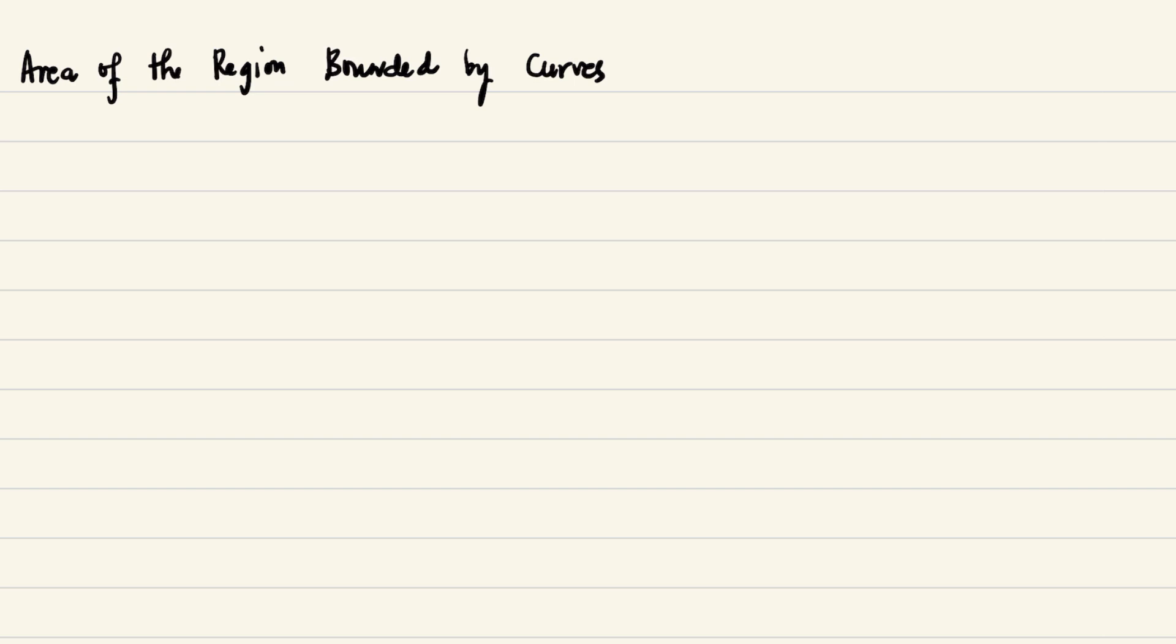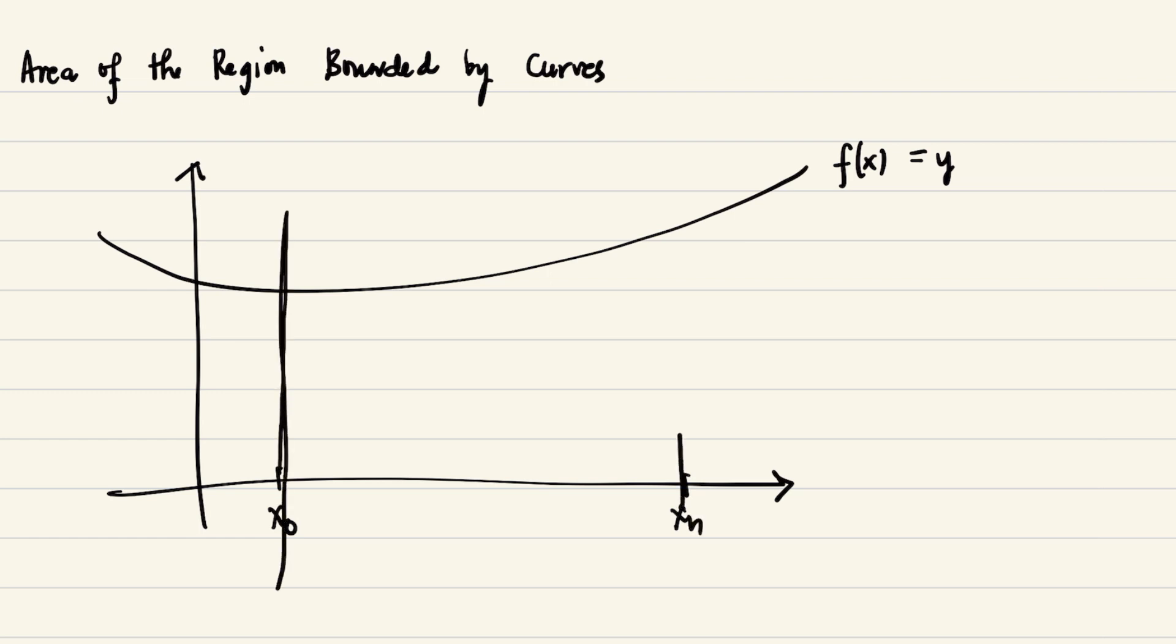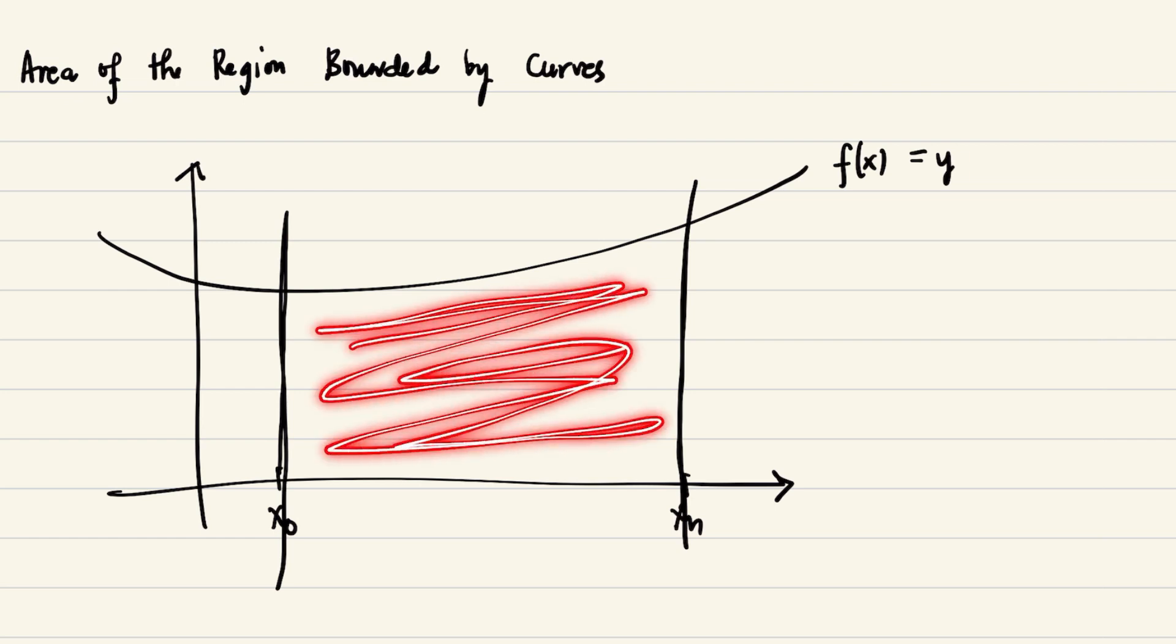So let's start now. The area of the region bounded by curves. Let's say we have the plane with the function f of x, this is y here. And then we have the lines that pass through these points, x sub 0 and x sub n. The fundamental question is that we are interested to find the area of the region bounded by this curve, these two lines, and this x-axis.